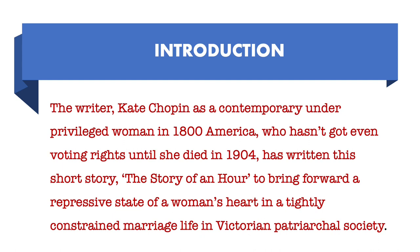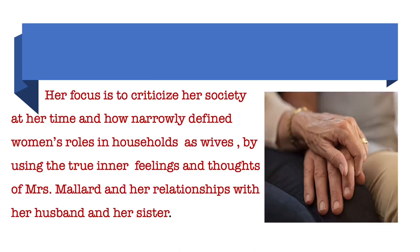Let's see how I organised my introduction: The writer Kate Chopin, as a contemporary underprivileged woman in 1800s America who hadn't even got voting rights until she died in 1904, has written this short story 'The Story of an Hour' to bring forward the repressive state of a woman's heart in a tightly constrained marriage in Victorian patriarchal society. Her focus is to criticise her society and how narrowly defined women's roles in households as wives, using the true inner feelings and thoughts of Mrs. Mallard and her relationships with her husband and her sister.